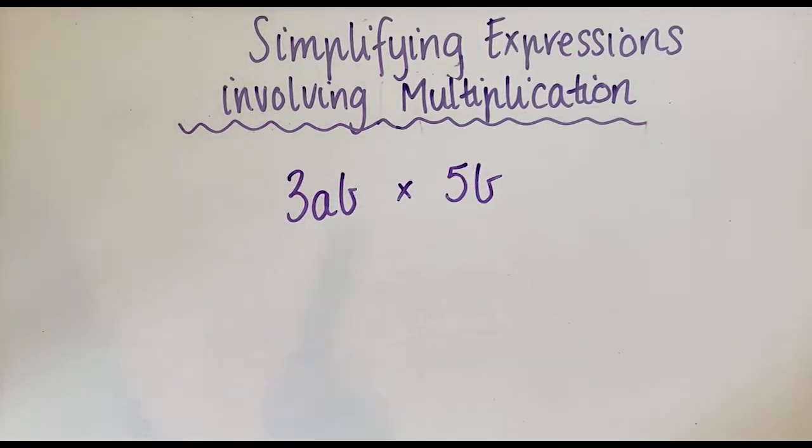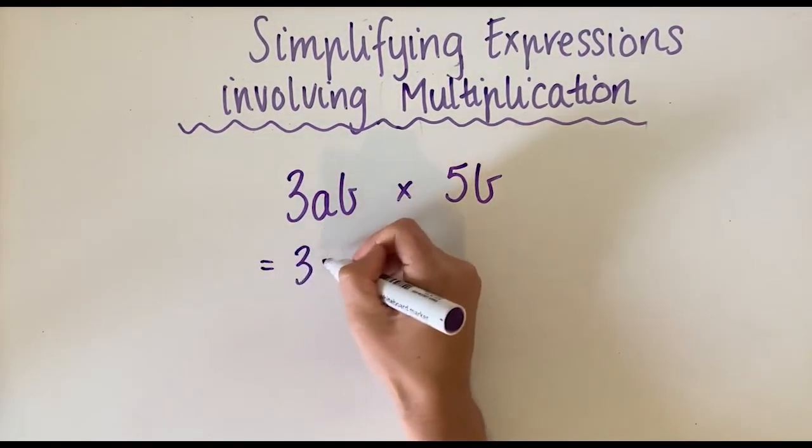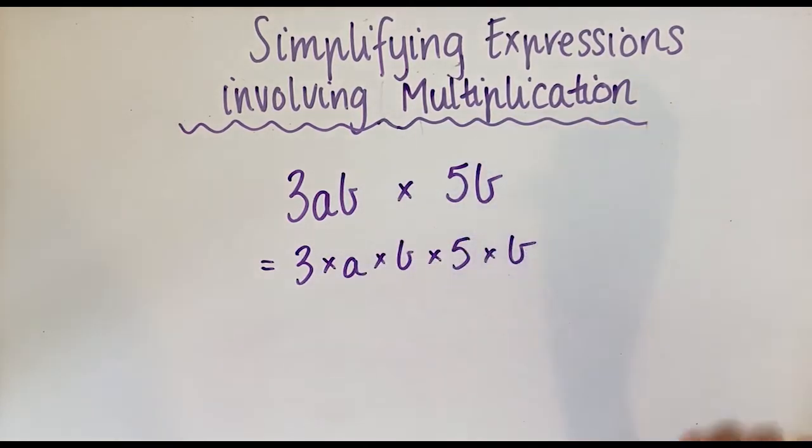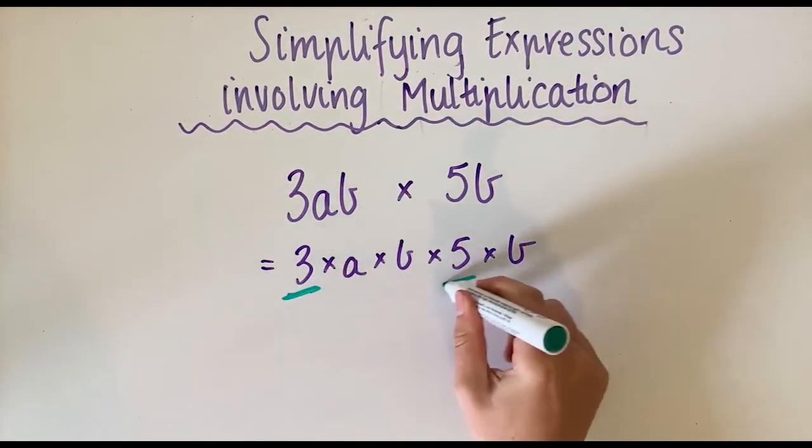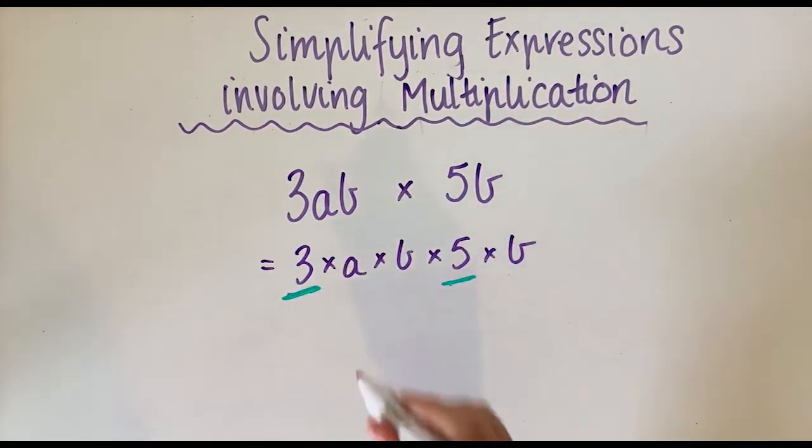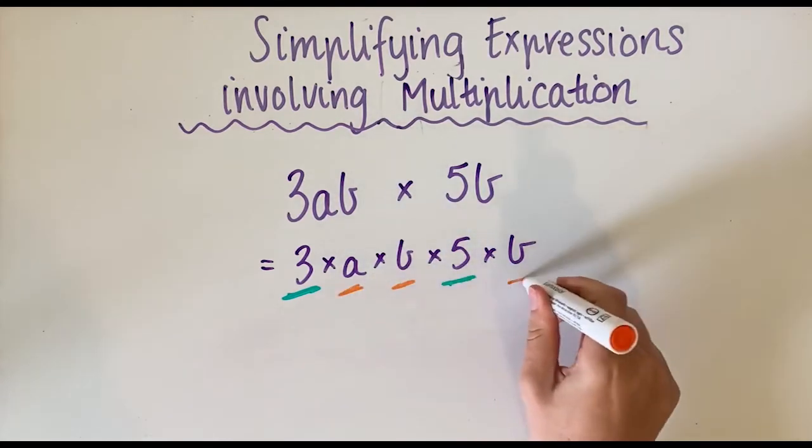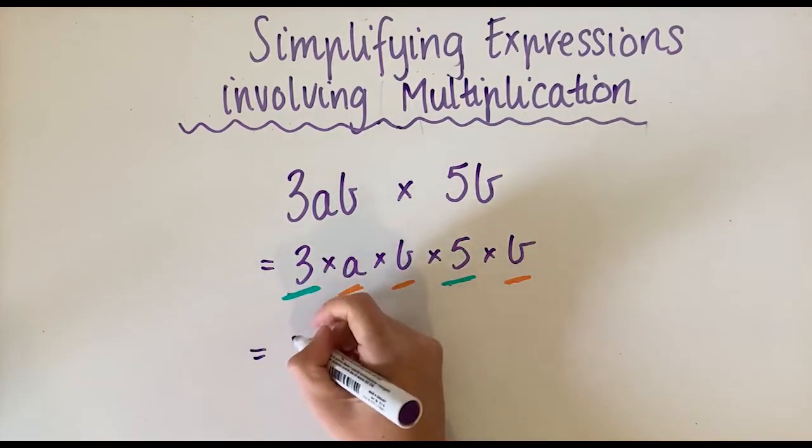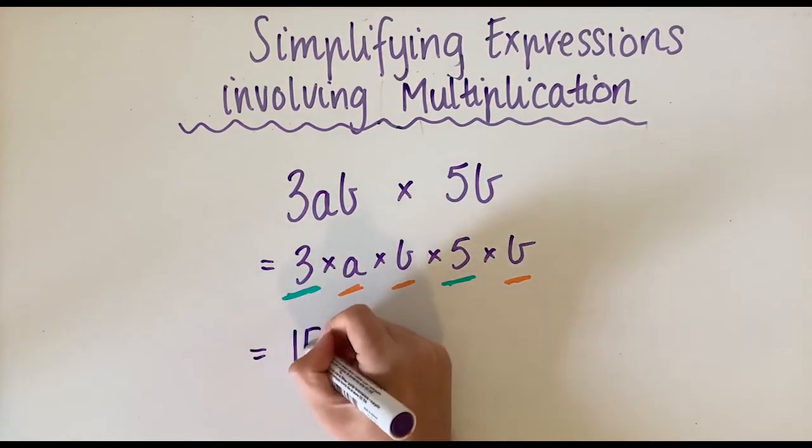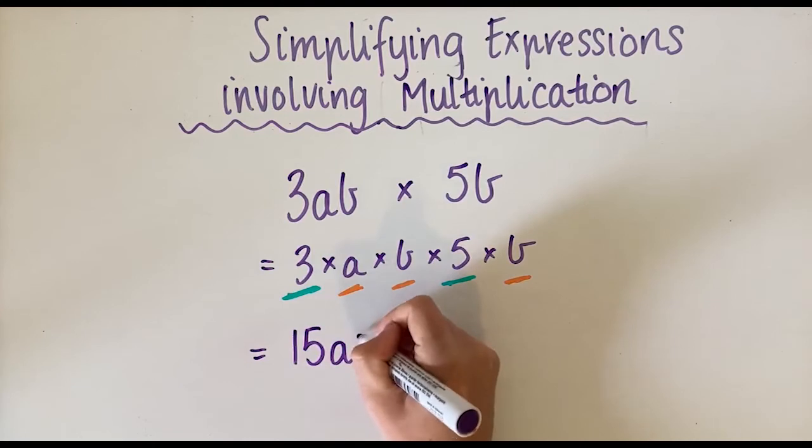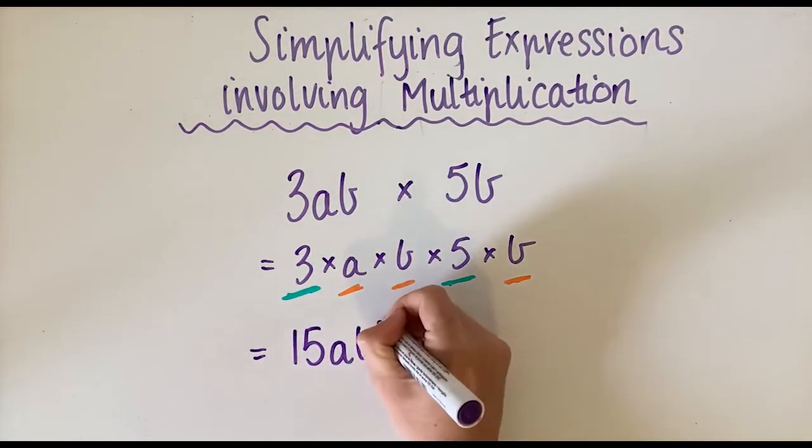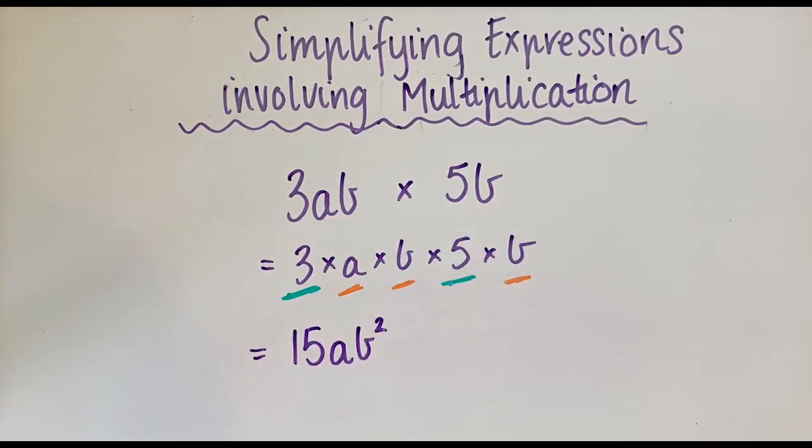This is our last one. Again, we're going to stretch them out. 3 × a × b × 5 × b. If you get really confident, you won't have to do all these steps. I've got numbers together and letter pronumerals together. So 3 × 5 is 15, and then we've got a, b. Now you can see we've got one b, two b's, so we're actually going to write b² there.